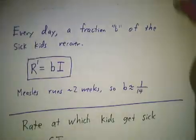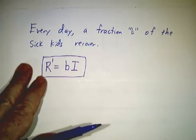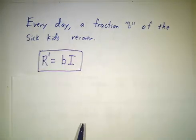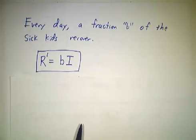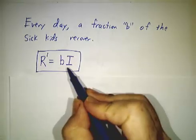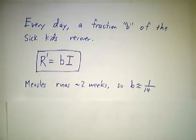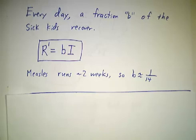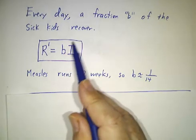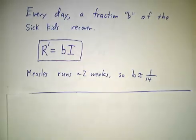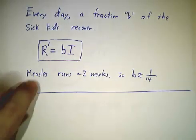So the first step is actually pretty easy. We're going to assume that every day a certain fraction of the sick kids recover. Now this isn't entirely realistic because a kid that's only been sick one day isn't going to recover tomorrow. And a kid that's been sick for two weeks probably will. Because measles tends to run for about two weeks. But we're simplifying. We're trying to get a model that we can actually solve. So let's just treat all of the infected kids the same, whether they got the disease yesterday or two weeks ago. And we'll just say, since measles runs for two weeks, let's just suppose that every day 1/14th of all of the infected kids recover.